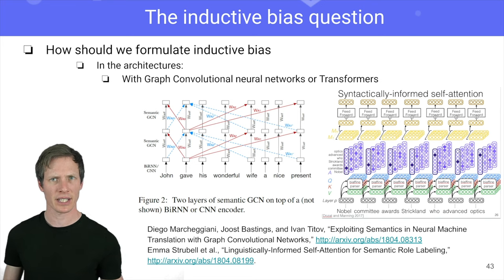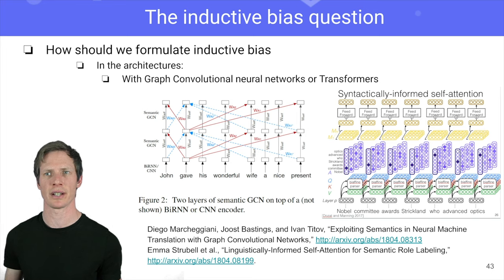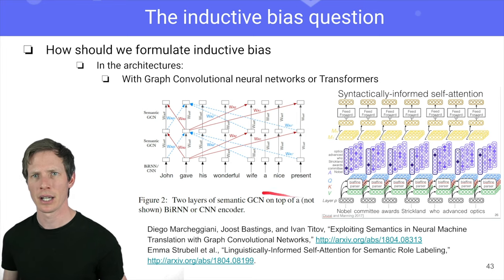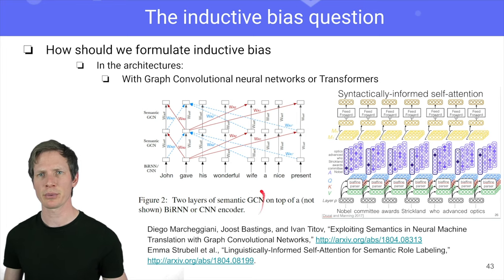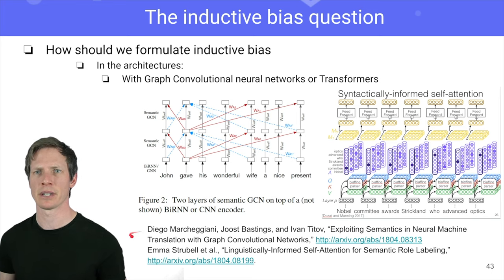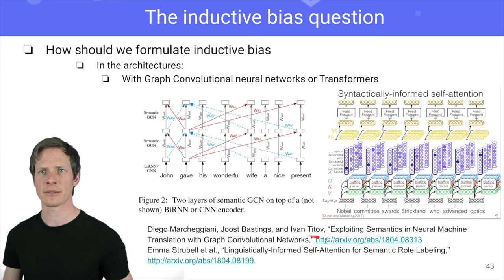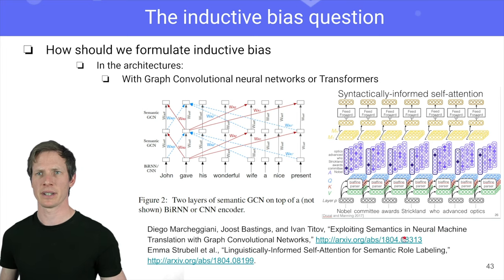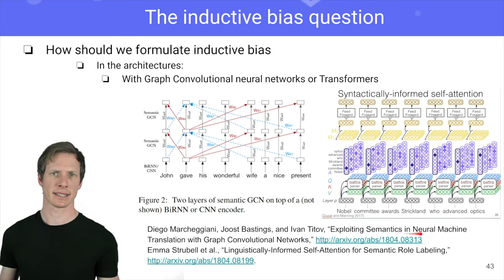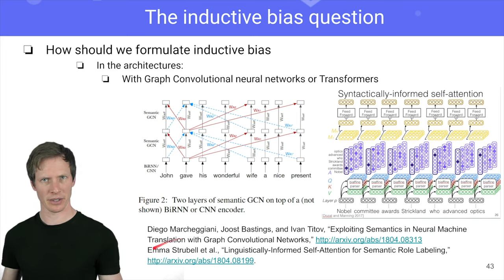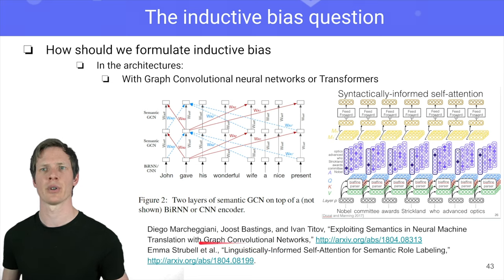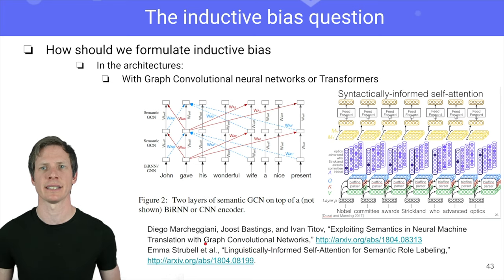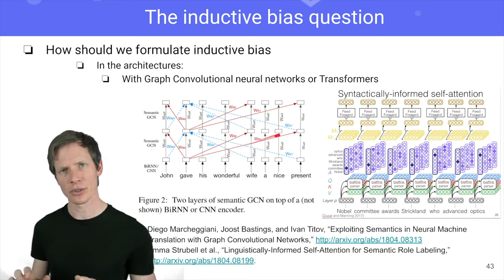There is also a lot of nice work on graph convolutional networks — for instance, work by Diego, Agnus Pasting, and Ivan Titov, where they explore semantics in translation with graph neural networks encoding the dependency trees.